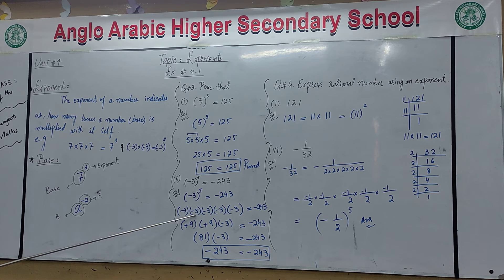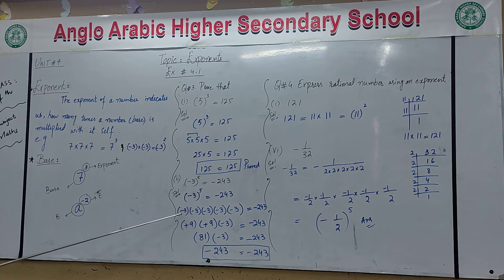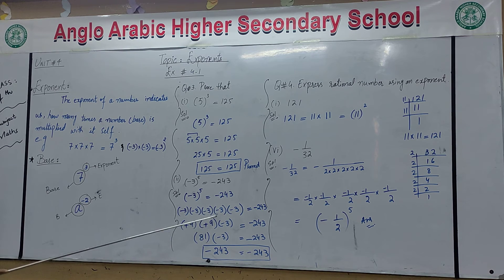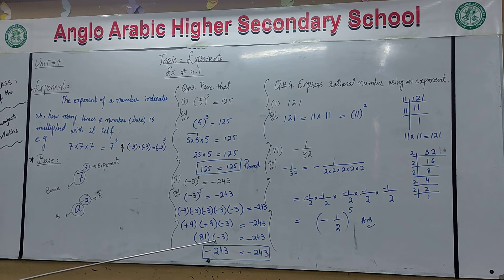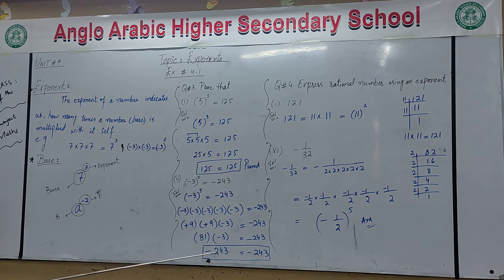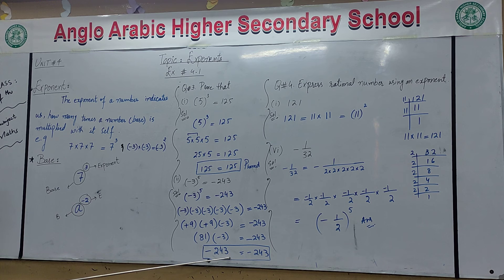We do the first two, third, and fourth, with the fifth one remaining. Minus three times minus three: minus times minus gives plus, so that is positive 9. Then 9 multiplied by minus 3 gives minus 27. Then minus 27 multiplied by minus 3 gives positive 81. Then 81 multiplied by minus 3 gives minus 243. So left hand side equals right hand side. Hence proved.